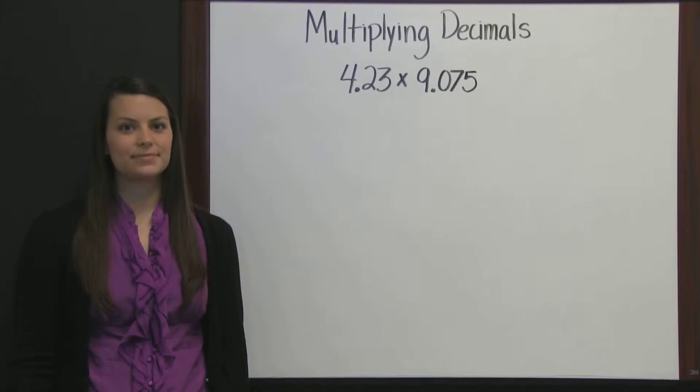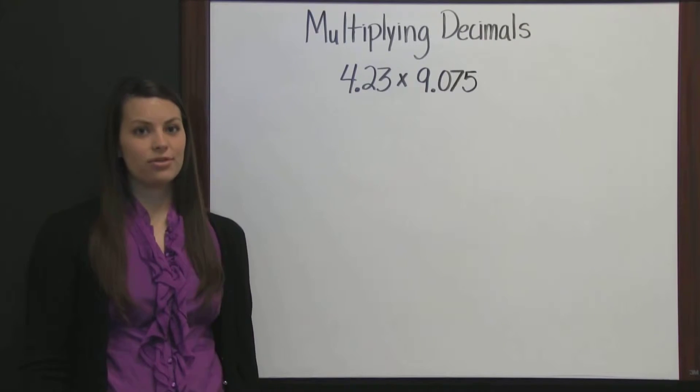Multiplying Decimals. When multiplying decimals, instead of lining up the decimal point, we line up the last digits on the right.